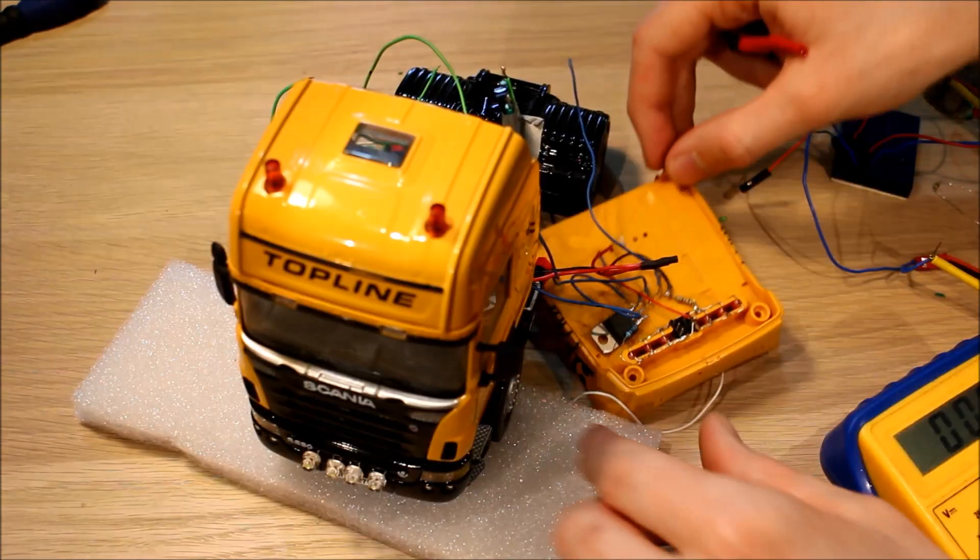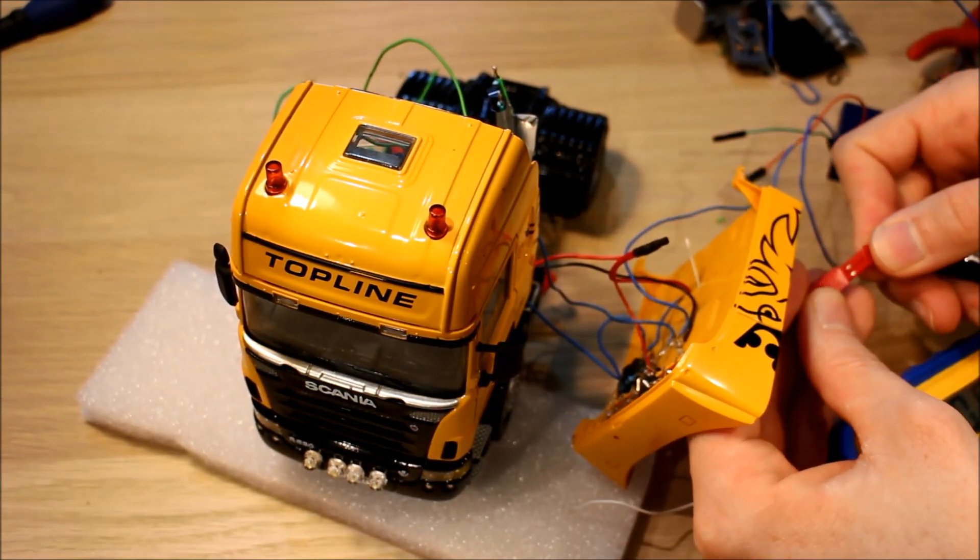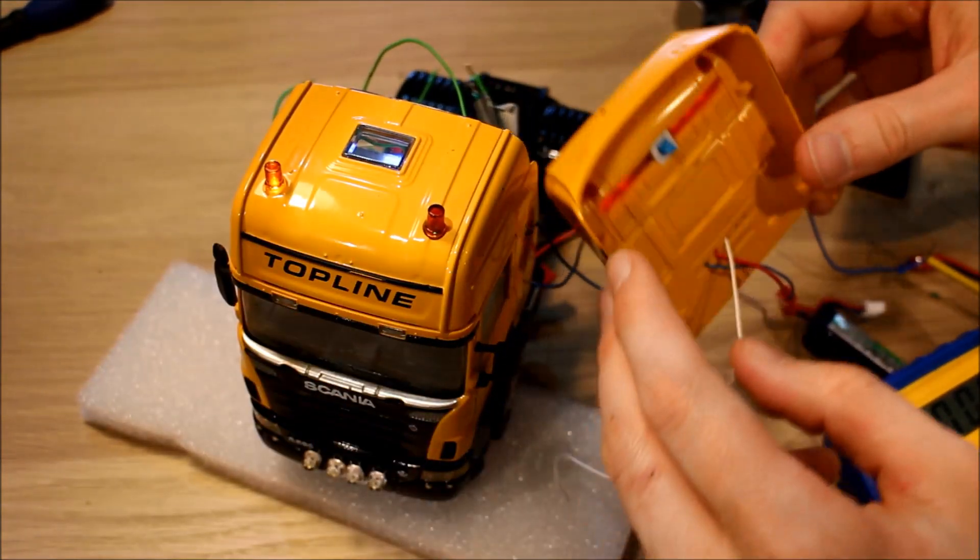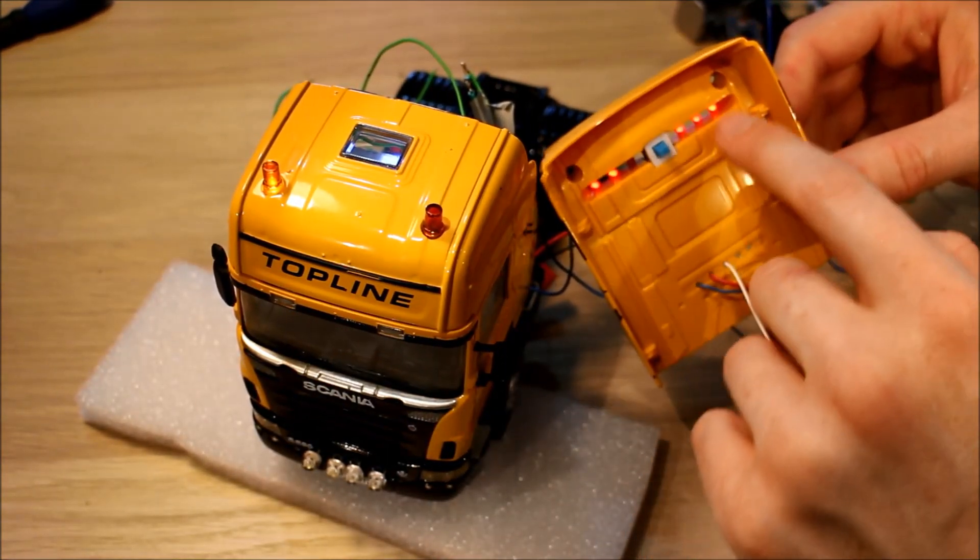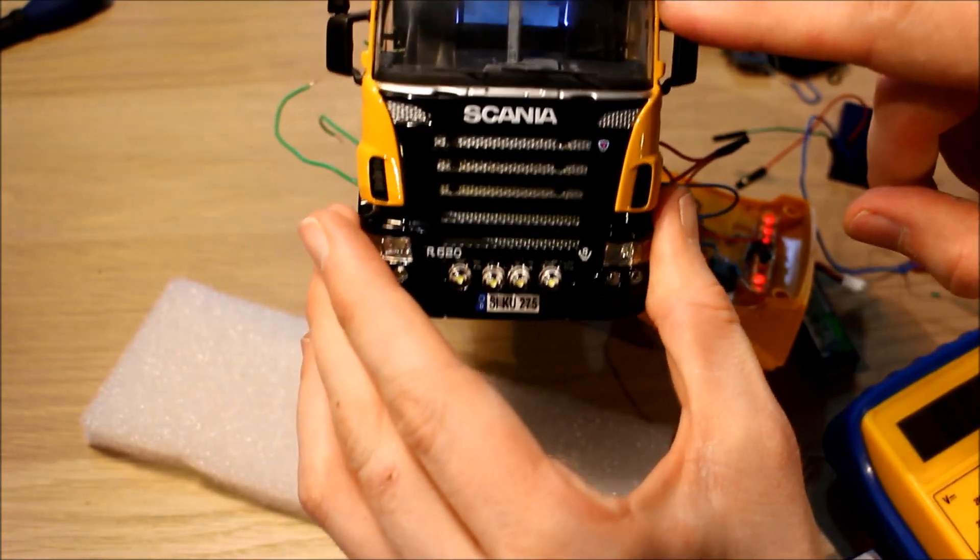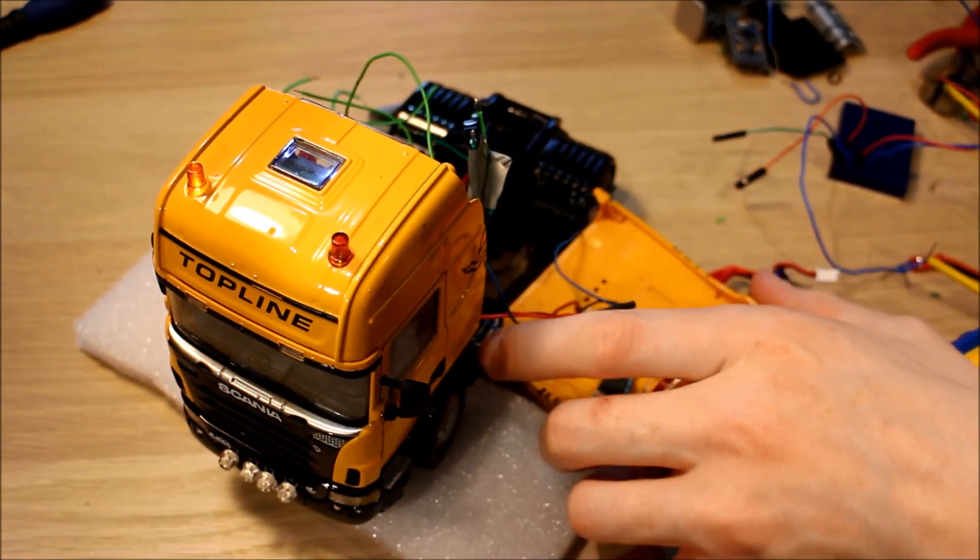Just to show you what happens when we put the 7.4 volt battery into this. Note we have an LED lit here, our lights on the back are lit, and in here the LCD screen is displaying an image. So that's all fine.